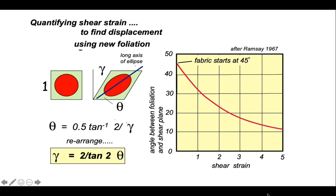Remember that this shape fabric will initiate at 45 degrees to the shear plane and then swing in to become parallel with the shear plane. So as the deformation continues, the angle between the foliation and the shear plane decreases, as you can see in the graph.